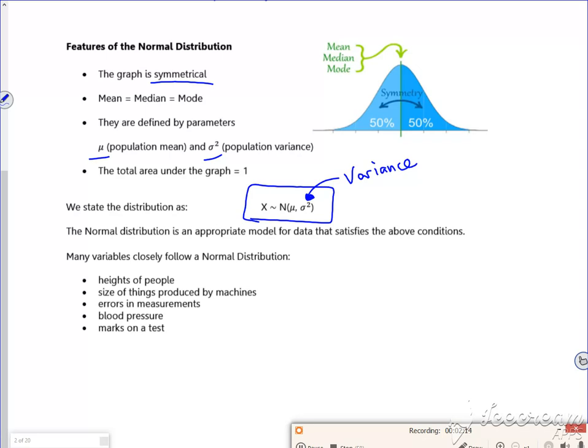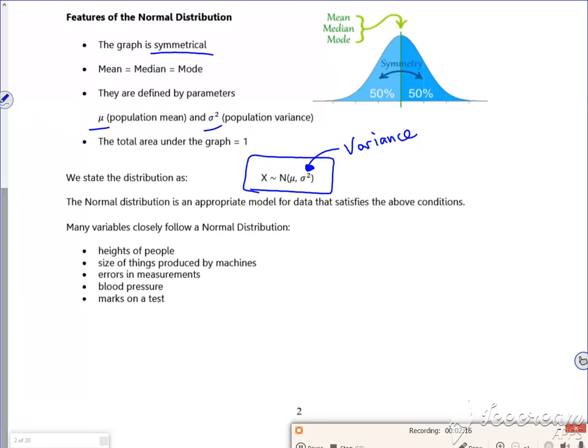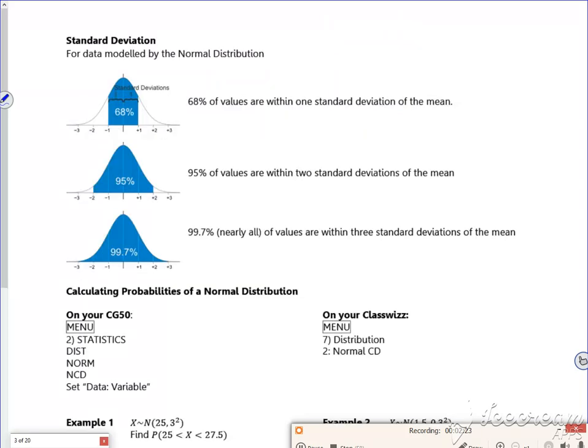So things that can follow a normal distribution: depending on what you read, within one standard deviation of the mean, so if you imagine there's a mean there, then that distance out is like minus one σ and that distance out is plus one σ from the mean. So this is the mean plus or minus one standard deviation. Some parts will tell you it's two-thirds, but our example is 68%.